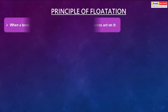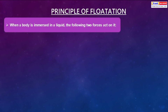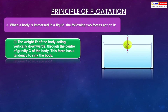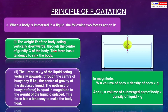Principle of flotation: when a body is immersed in a liquid, two forces act on it. First, the weight of the body acting vertically downward through the center of gravity G, which tends to sink the body. Second, the upthrust of the liquid acting vertically upward through the center of buoyancy B, which is the center of gravity of the displaced liquid. The upthrust always equals the weight of liquid displaced. In magnitude: weight = volume of body × density of body × g, and buoyant force = volume of submerged part × density of liquid × g.